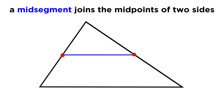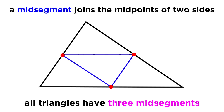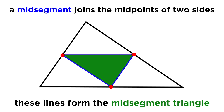A mid-segment of a triangle is a line segment that joins the midpoints of two sides of the triangle. Every triangle will therefore have precisely three mid-segments, and these three line segments form another triangle — the mid-segment triangle.